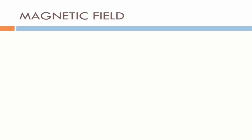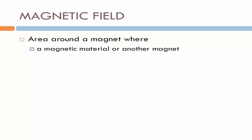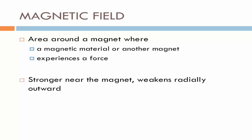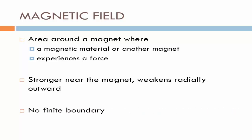Now this area is known as the magnetic field. A magnetic field is an area around a magnet where a magnetic material such as iron, cobalt, or nickel, or another magnet, experiences a force either of attraction or of repulsion. This magnetic field is stronger near the magnet and it weakens radially outward from the magnet. That means the force of attraction will be stronger near the magnet and then outward the force of attraction will be weaker and weaker. This is the reason why the magnetic field has no finite boundary.